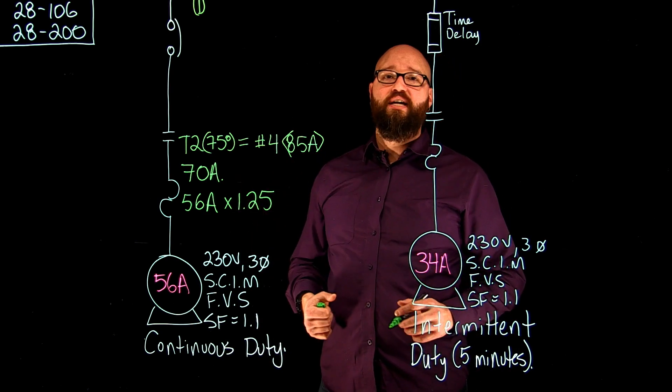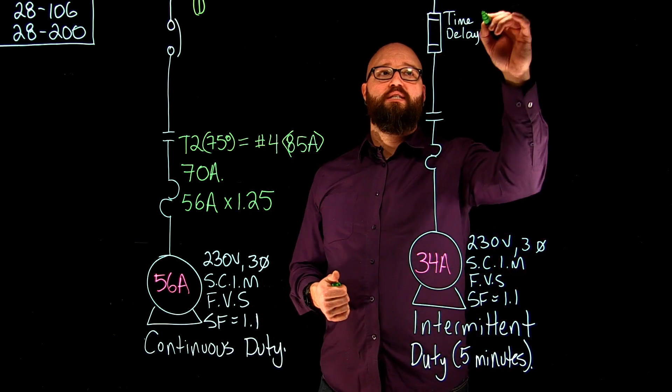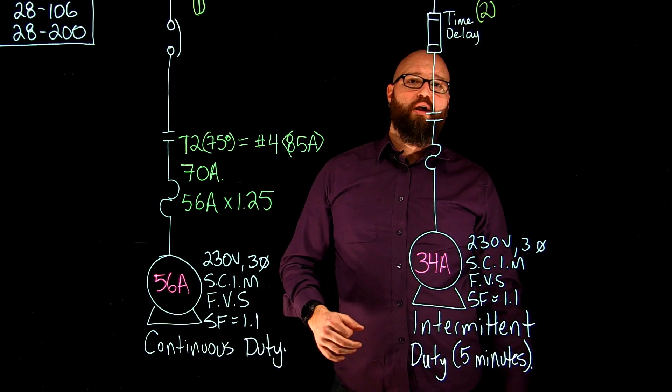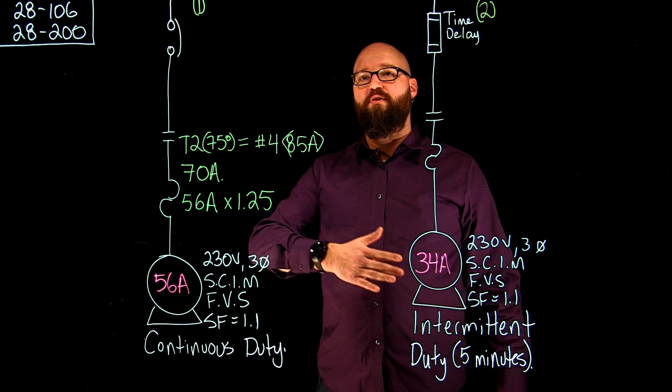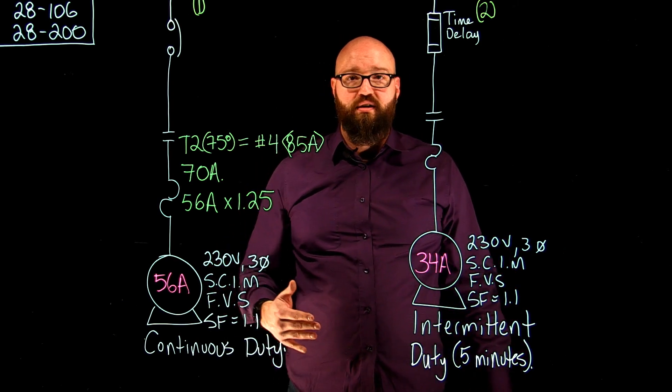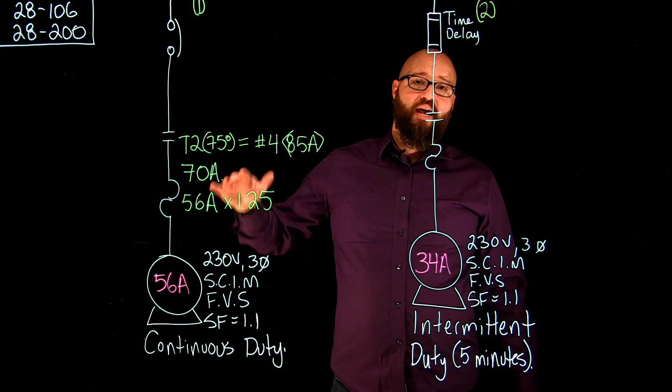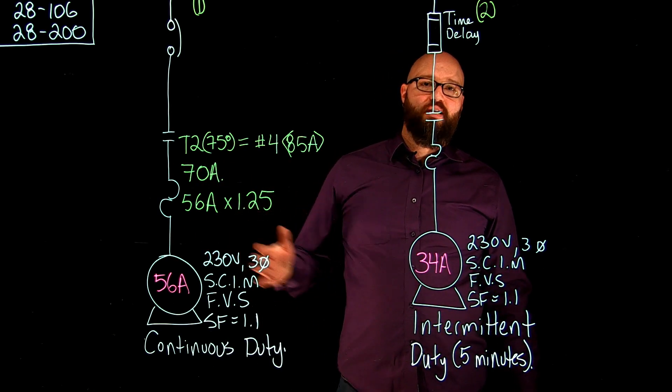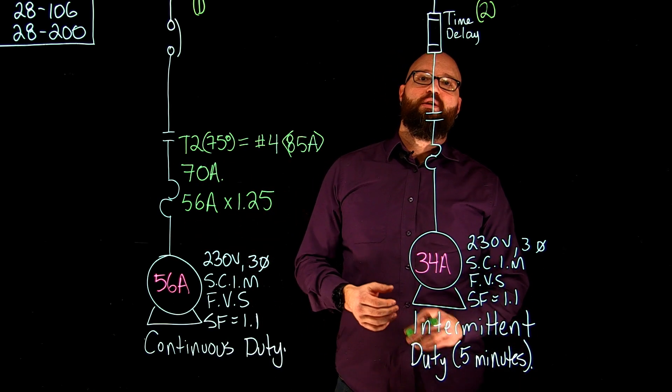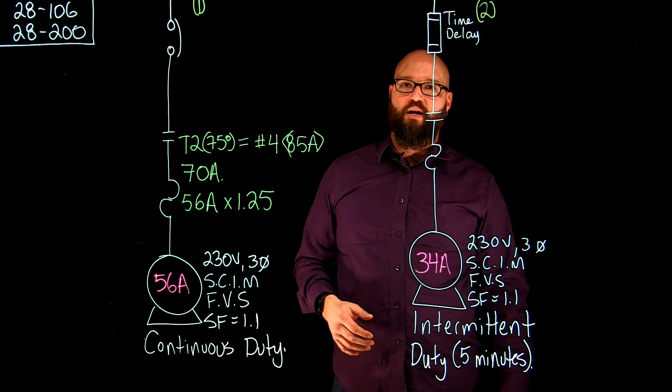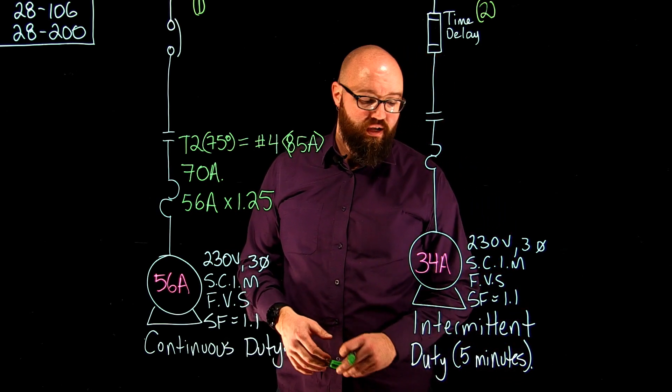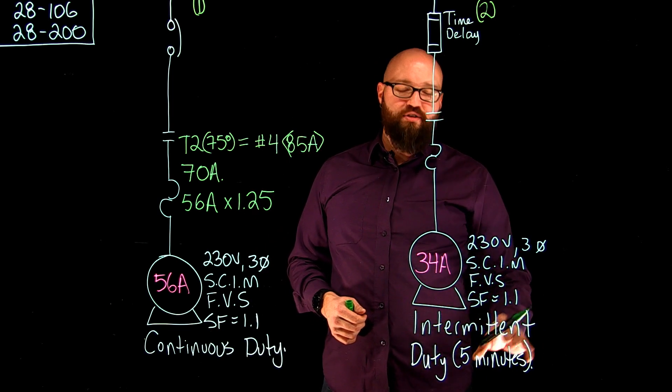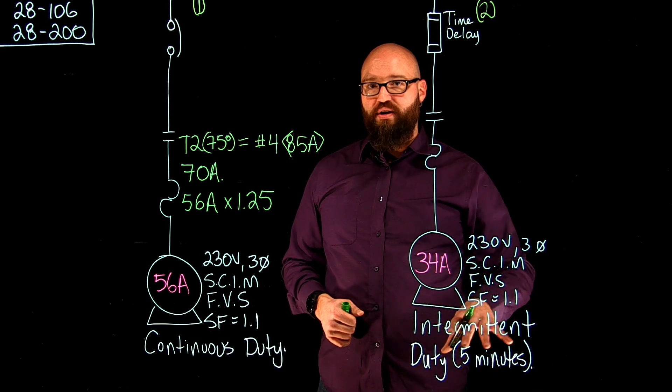So if I take a look at 28-106 sub-rule two, it actually tells me it doesn't give me a multiplier rate in sub-rule two. What it does is it refers me to table 27. In table 27, 27 has a bunch of different duty ratings on these motors. And with that duty rating in mind, it has the rows determine what the amount of time is that we're going to actually have this motor on for. And in this case, I've got it listed as intermittent duty and five minute rating.